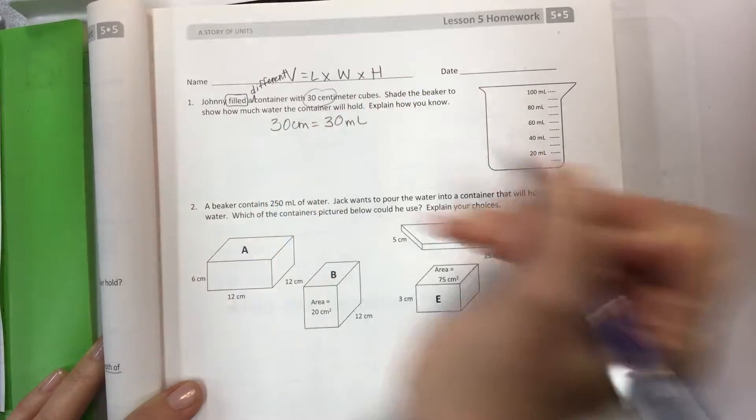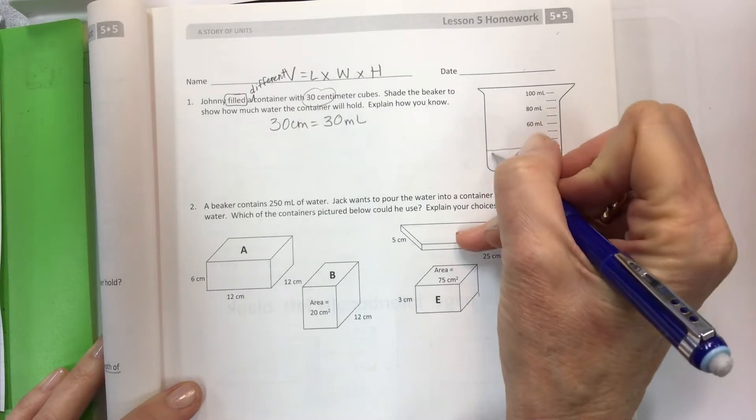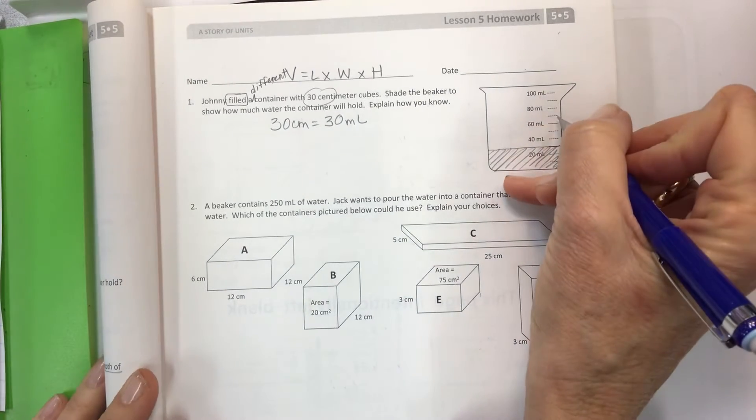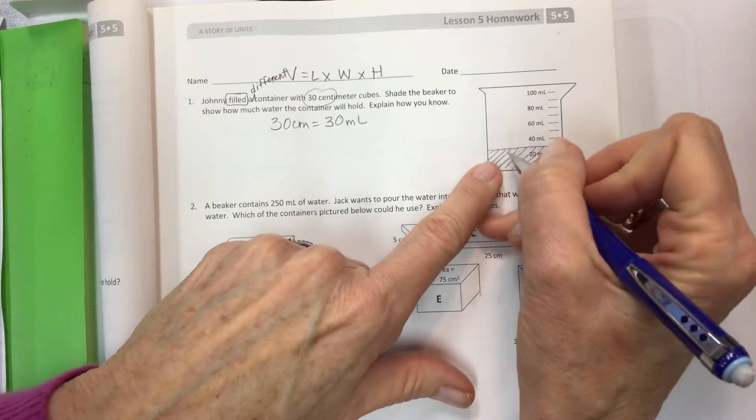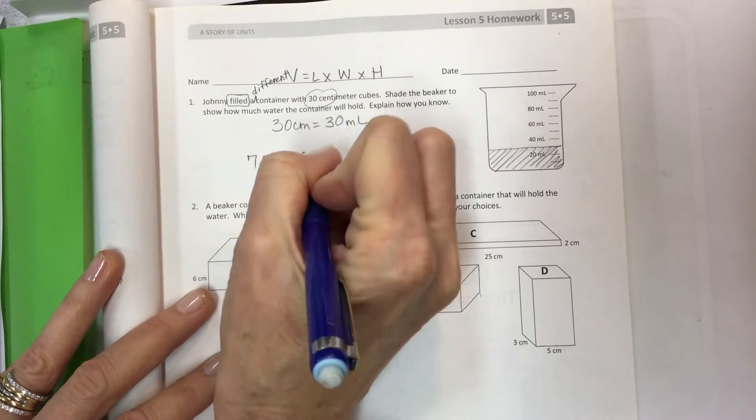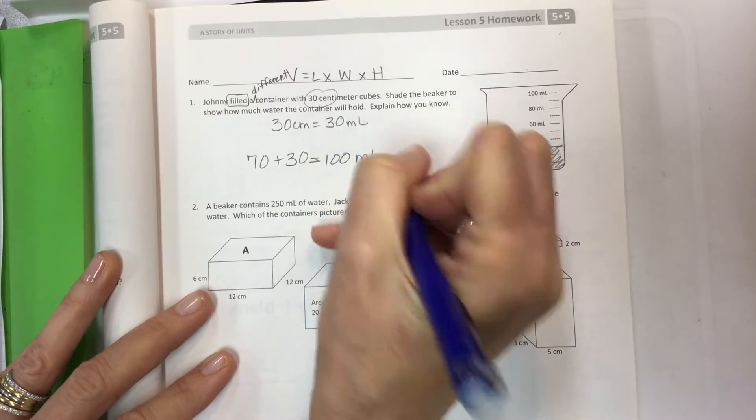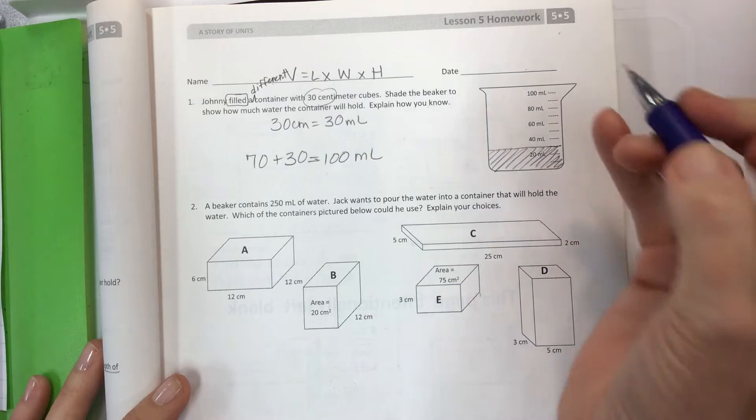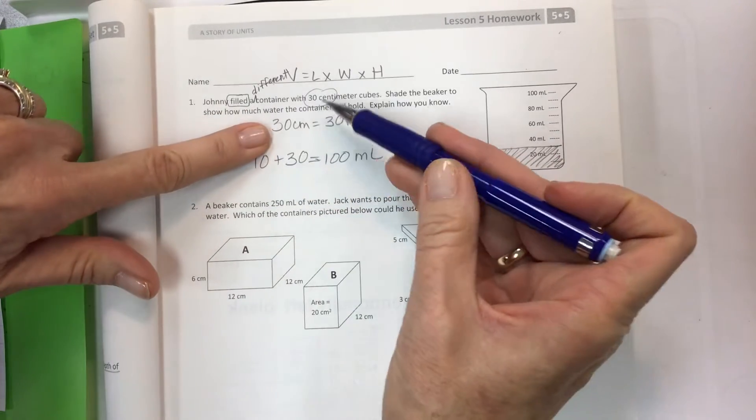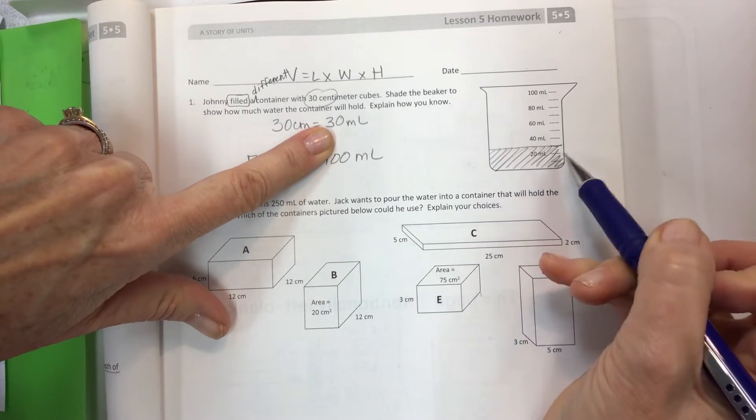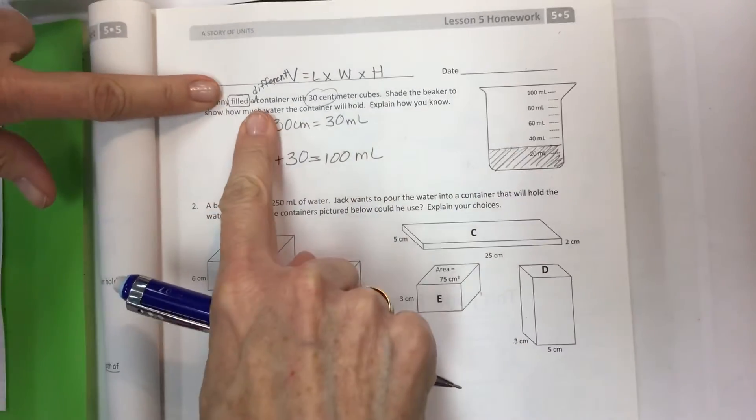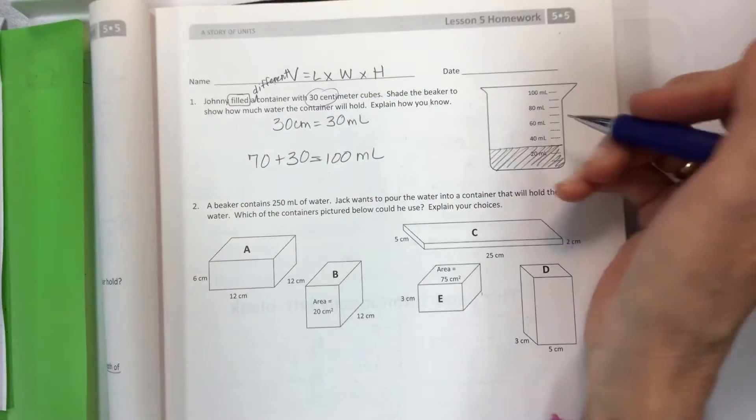However what they would like you to do is give you the option so that you could make mistakes on it. They're saying okay, out of all these options how much water could that container hold, and so they're telling you right here 30 centimeters is equal to 30 milliliters. So what you should do is shade this to the 30. However you decided to do it, just be aware that one cubic centimeter is equal to one milliliter, and so if you have 30 centimeters it equals 30 milliliters.